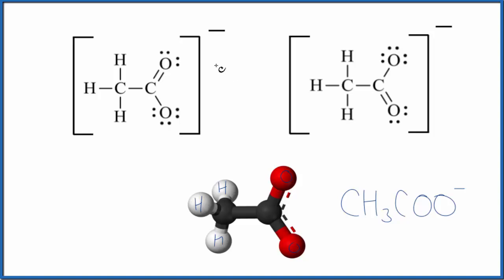So there are two resonance structures we can draw for the acetate ion here. First in this one, you can see we have a double bond on this oxygen and a single bond here on this oxygen. It's just the reverse over here. Instead of the double bond on the top, we have the double bond on the bottom. So these are the two different resonance structures we can draw for the acetate ion, the CH3COO-.